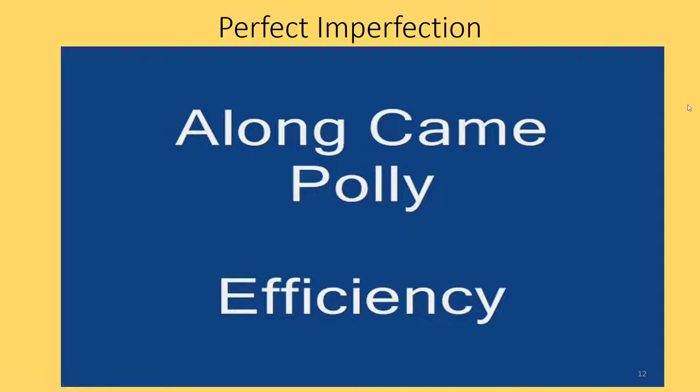To set up the clip, there are two characters: Ruben, a risk analyst who is excessively neat — to the point where it's starting to ruin his life — and Polly, who is excessively messy to the point where that becomes relatively inefficient for her. They're going to meet and find an equilibrium between the two of them and both be better off as a result.